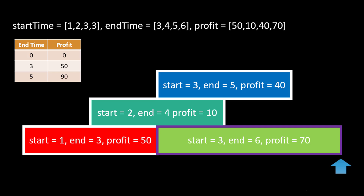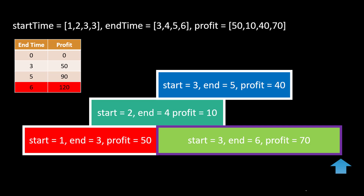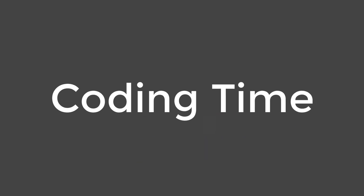Moving to the last job, we check for any job ending at 3 and find one with profit 50. The maximum profit becomes 120, which is higher than the last value in the map. So we put 6 comma 120 into the map. This value of 120, being the highest in the map, is the maximum profit we can make from this set of inputs. When we apply this logic we will be able to figure out the result, which will be much clearer when we code this approach.